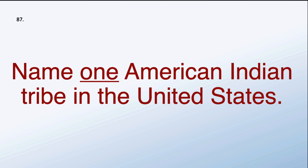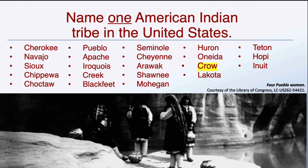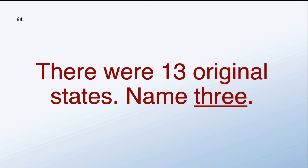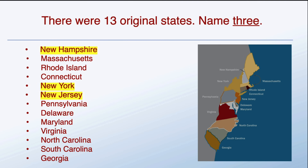Name one American Indian tribe in the United States. There's a list — I chose Crow. Crow is the name of one American Indian tribe. There were 13 original states — name three. I chose New Hampshire, New York, and New Jersey.